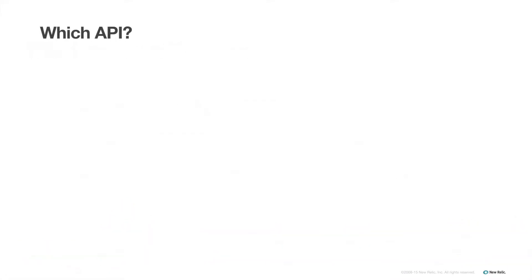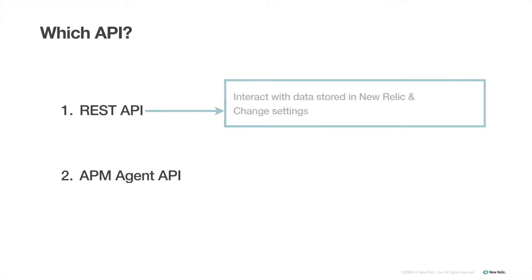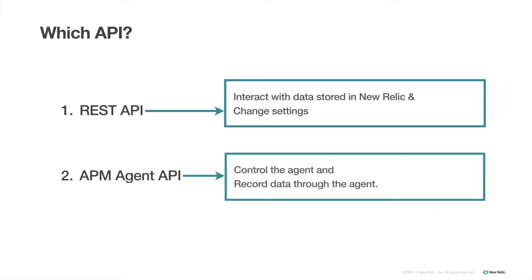There are a number of great APIs for different New Relic products. For the APM Agent, there are two APIs that are commonly used and referenced. These are the REST API, which is for getting data out of your New Relic account or for changing settings, and the Agent API, which is for controlling the agent and recording or sending data through the agent.